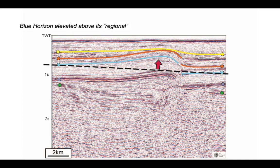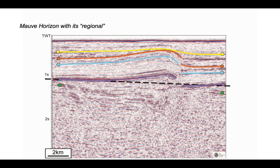Let's do the same again now for the mauve horizon. There's the mauve horizon, broken by a fault. There's its regional. And again, the mauve horizon has been elevated above its regional in the vicinity, particularly on the left hand side of that fault break.